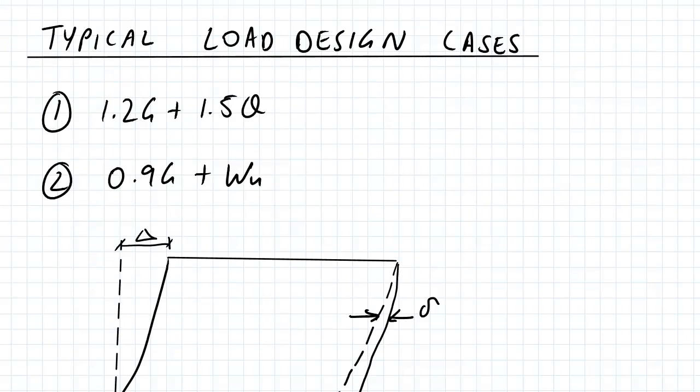Typical load design cases - what we're looking at is 1.2G plus 1.5Q. You would have used this formula in your design assignments 2 and 3. We also have 0.9G plus WU, which is another load combination where we've just got the dead load and wind uplift.